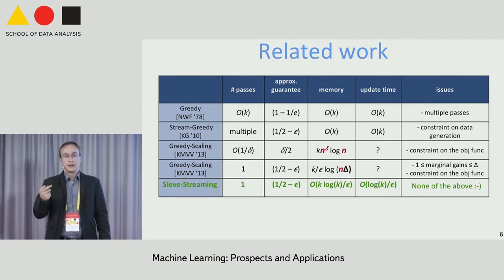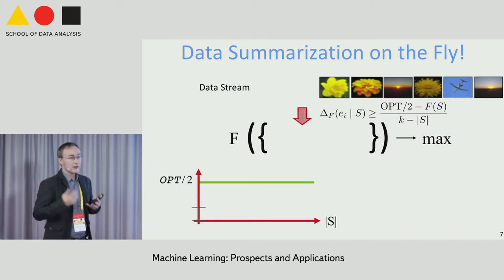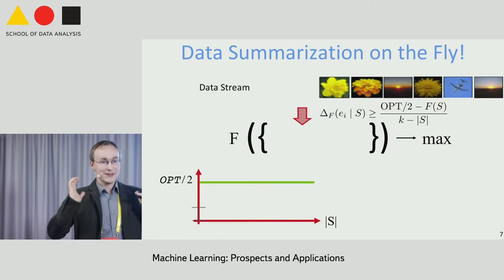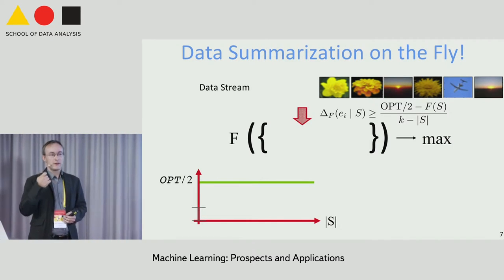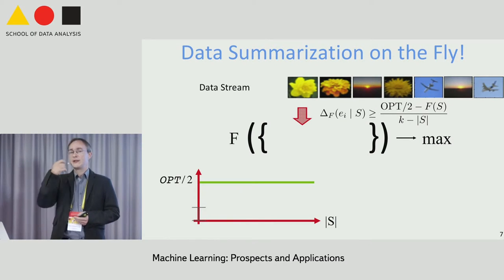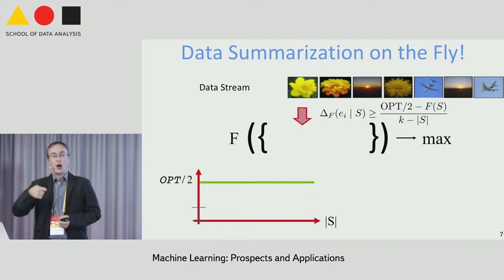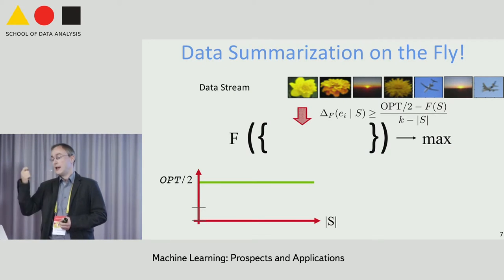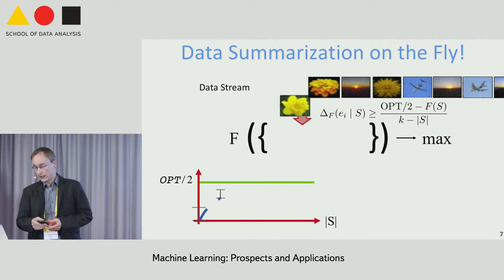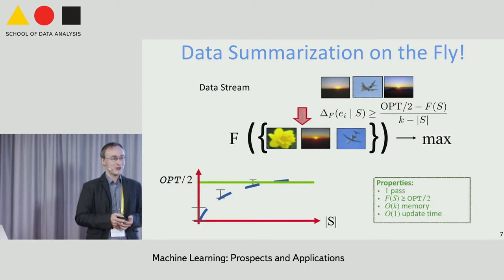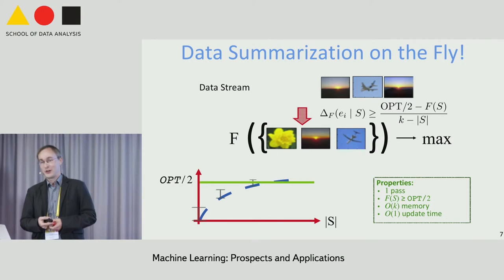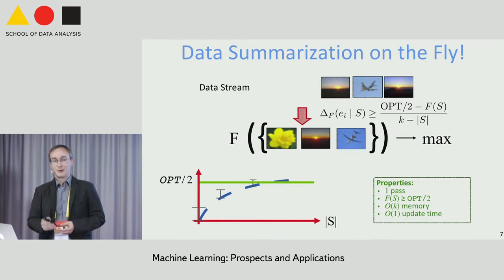Let's start with a first attempt—a really simple algorithm—under the assumption that we know the value of the optimal solution OPT. We process one element at a time and check whether its marginal gain is a substantial fraction of the remaining optimal value. We pick an element if it provides at least a good fraction of that remaining value, processing elements one at a time, always comparing against the threshold, stopping once we've filled our set. This is a single pass, constant update time, O(k) memory, and gives you half of the optimal value. The problem is we can't actually run this algorithm because we don't know OPT—computing it is NP-hard.